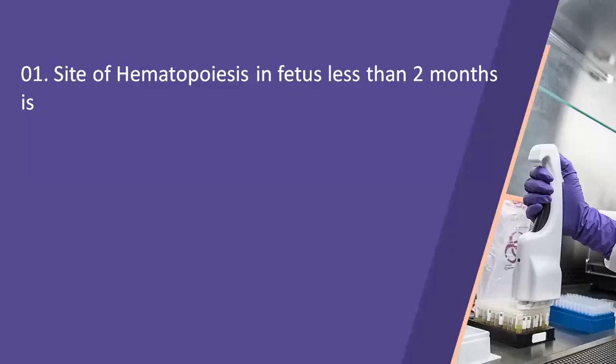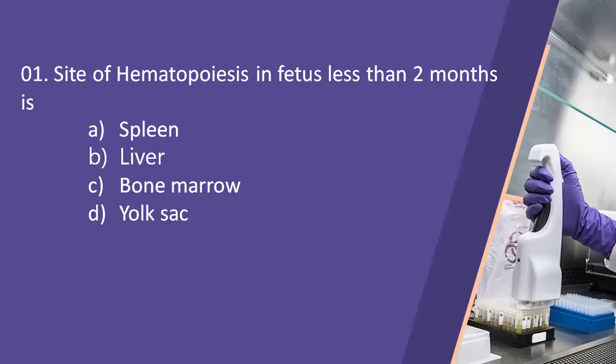First question: site of hematopoiesis in fetus less than two months is? Option A, spleen. Option B, liver. Option C, bone marrow. Option D, yolk sac. Here the right answer is yolk sac.